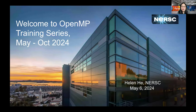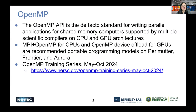My name is Helen He. I'm from NERSC training, and welcome today to the OpenMP training series — the last four to seven months of monthly sessions. A quick summary of what OpenMP is: it is the de facto standard for writing parallel applications for shared memory computers, supported by multiple scientific compilers on CPU and GPU architectures. MPI and OpenMP for CPUs, and MPI plus OpenMP device offload for GPUs, are the recommended portable programming models for Perlmutter, Frontier, and Aurora.